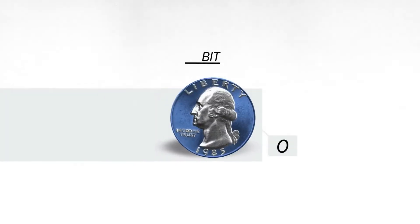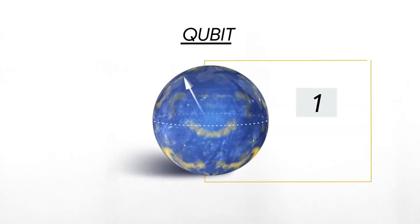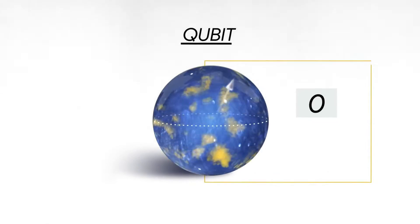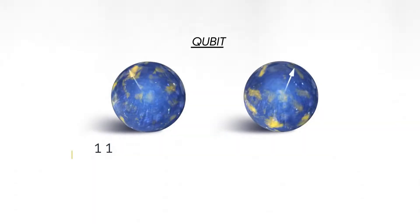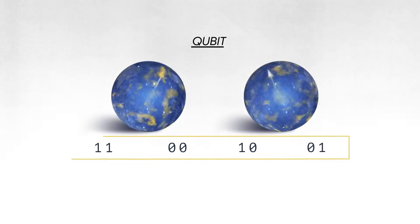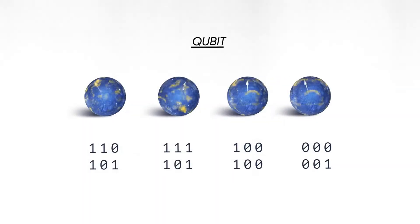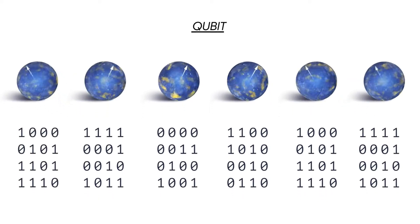The classical bit stores information as a zero or one, and a quantum bit can be both zero and one at the same time. If you have two quantum bits, then there are four possible states that you can put in superposition. With three qubits it's eight, four qubits it's 16 — it grows exponentially.